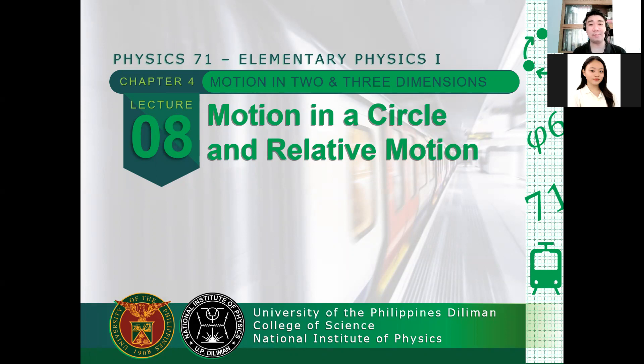Yesterday, we discussed one particular case, one special case of motion in 2D and 3D dimensions, which is your projectile motion. From that, remember that there are equations that we obtained in which the assumption is that for the vertical component basically has a free-fall motion and the horizontal component is just your usual constant velocity motion. So there are other cases that we can consider when we go to 2D and 3D. One simple case is uniform circular motion.